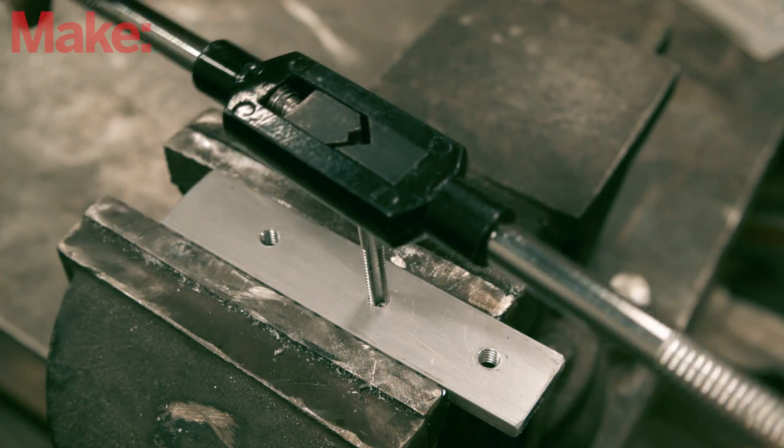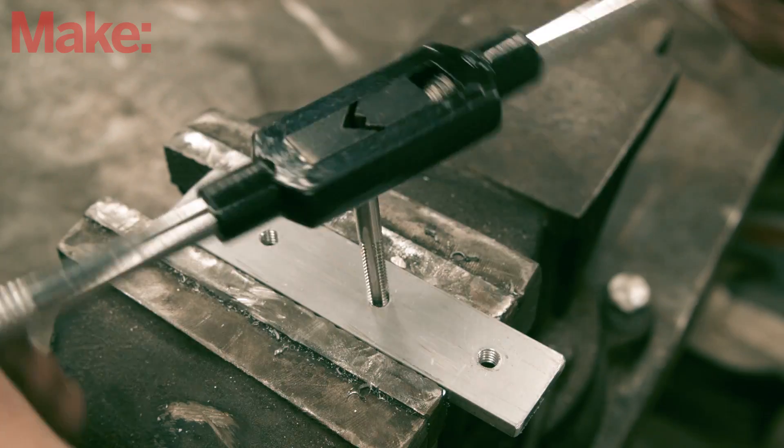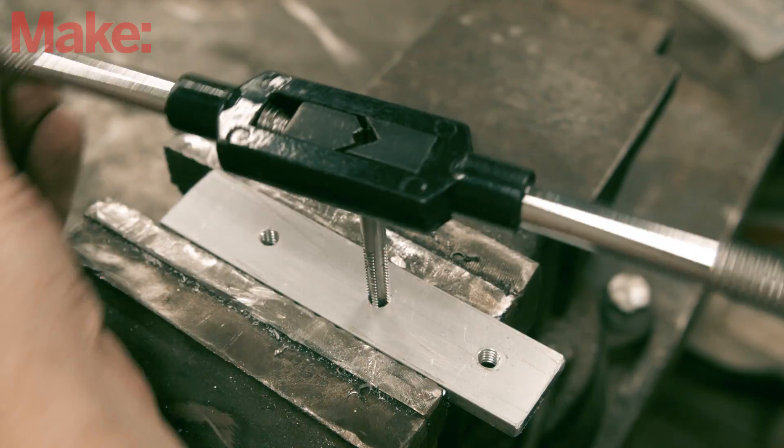From here, after every full turn of the tap, give it a half turn in reverse. This will break the chips off and clean out the thread. Repeat this until the tap is completely through the material.